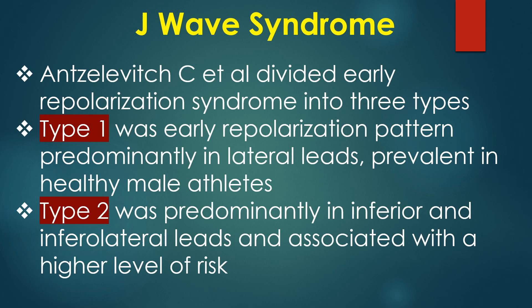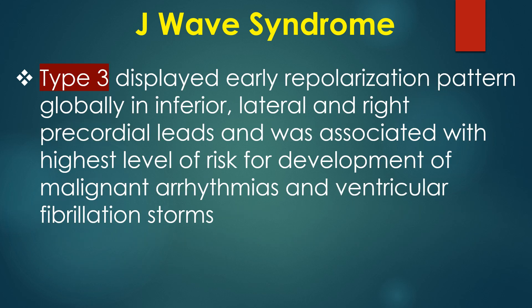Ansleywitz and Quilex divided early repolarization syndrome into three types. Type 1 was early repolarization pattern predominantly in lateral leads, prevalent in healthy male athletes. Type 2 was predominantly in inferior and infralateral leads and associated with a higher level of risk. Type 3 displayed early repolarization pattern globally in inferior, lateral, and right precordial leads and was associated with the highest level of risk for development of malignant arrhythmias and ventricular fibrillation storms.